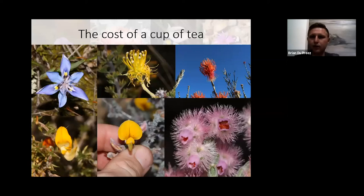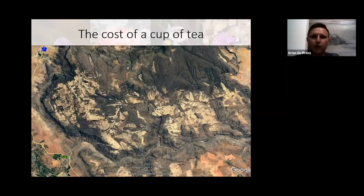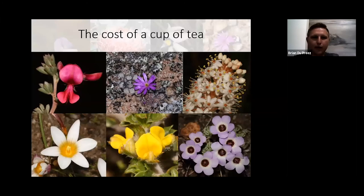Unfortunately the Cederberg is not the only area that's been suffering. Looking at a Google Earth image of the Gifberg, the total area lost to rooibos cultivation is probably between 15 and 40 percent. The Gifberg is also home to incredible plant species — an Indigofera on the top left corner literally only known from one or two little spots on the Gifberg, as well as Oxalis species in the lower corners growing in the steep face area nearby.